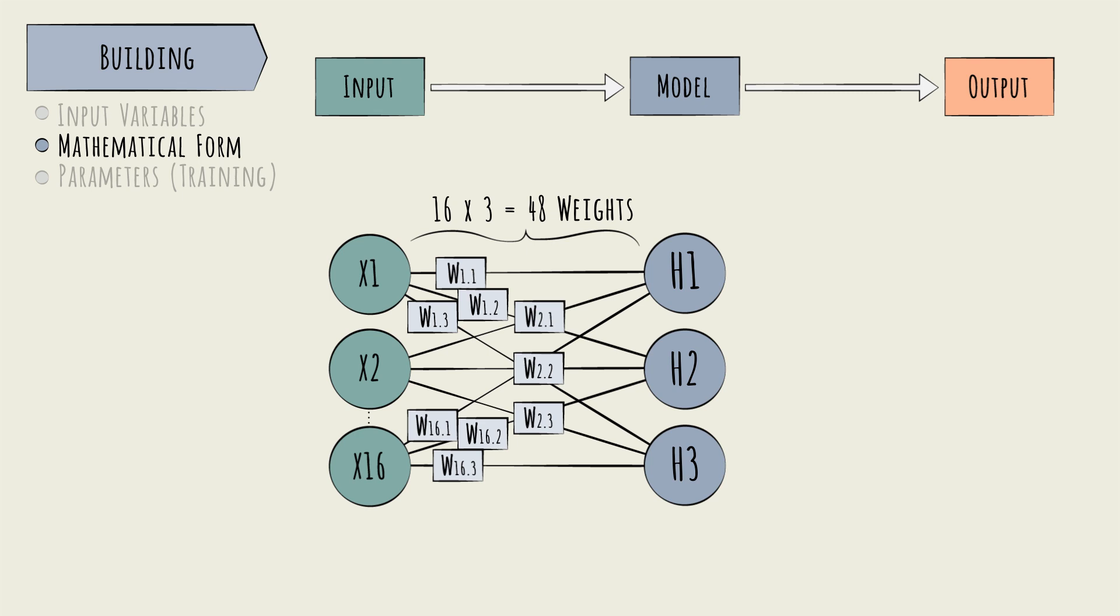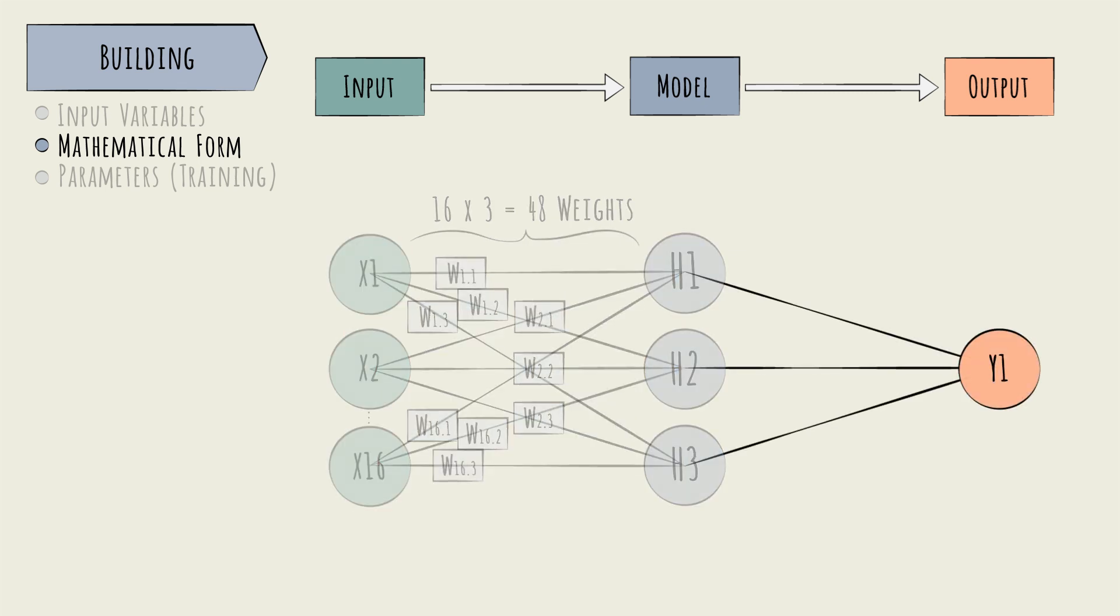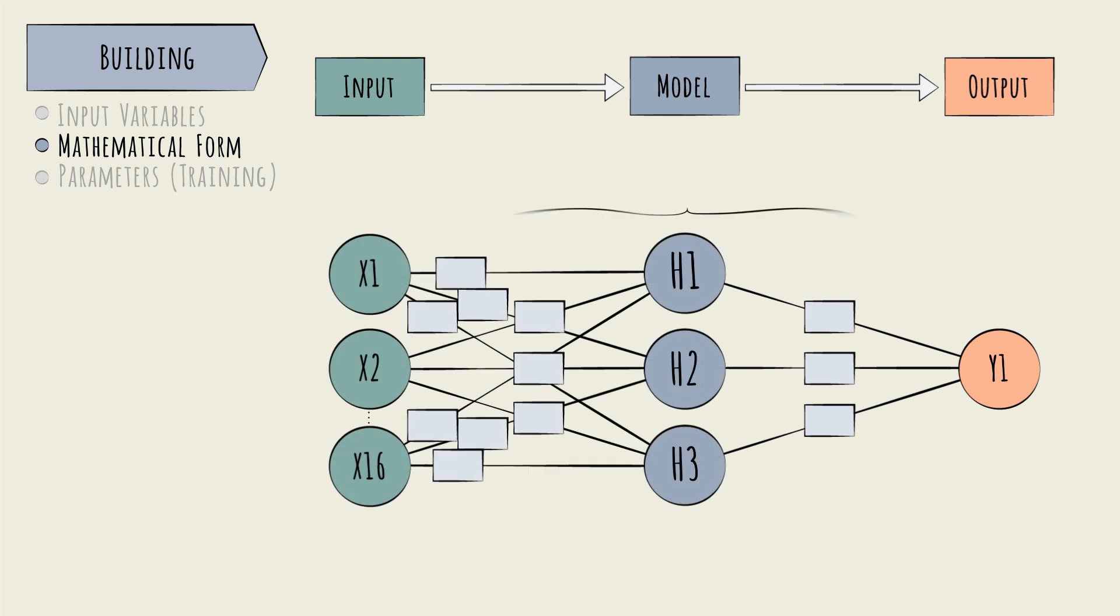We need to repeat the process between each layer. To calculate the output node, we need a single sum, using three new weights. So, in total, this model has 48 plus 3 weights. Remember, we don't know the values of these weights yet. This takes us to our final step of the model build, training it.